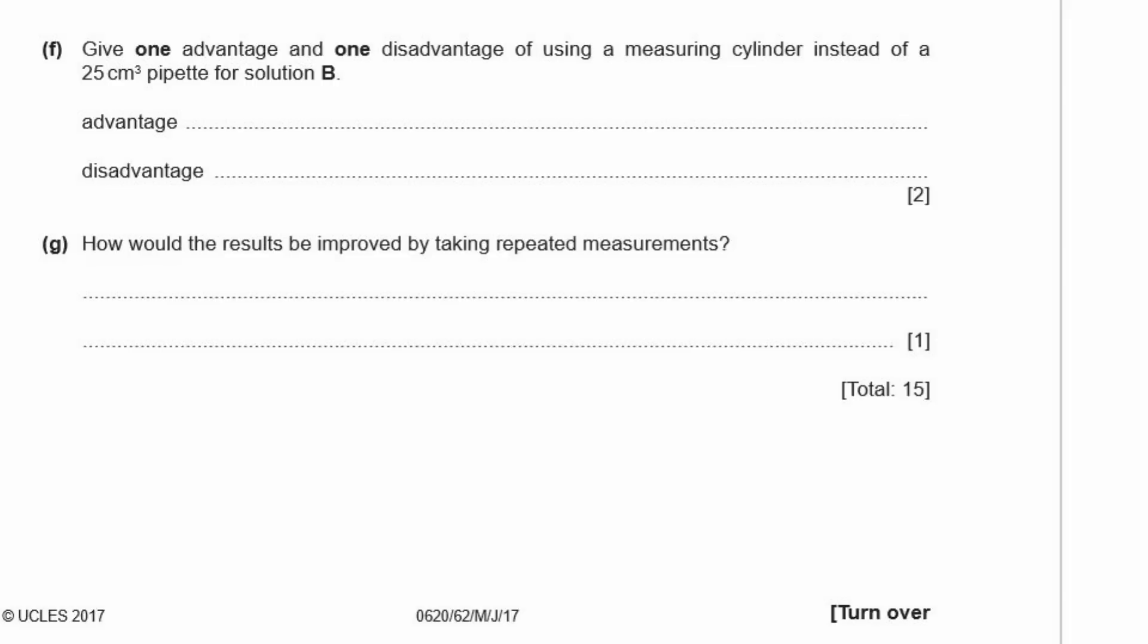F. Give one advantage and one disadvantage of using a measuring cylinder instead of a 25 centimeters cubed pipette for solution B. Okay. Measuring cylinders are much easier and faster to use than pipettes. So it's quicker to use. Okay. So it says one advantage, easier is one, faster is another. It only wants one of them though. So just write faster or quicker to use or easier to use. It's also okay. And the disadvantage is that the measuring cylinder, because the diameter of it is wider than the pipette, it's less accurate. So it's not as accurate.